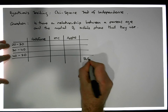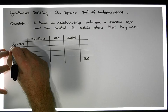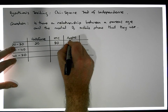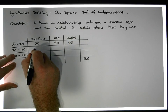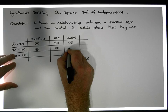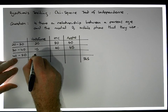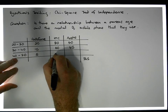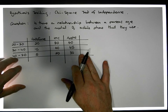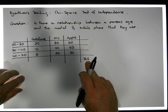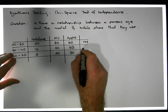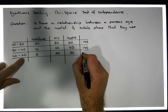There were 365 people in total questioned. In the 20 to 30 year old category: 20 used Vodafone, 80 used HTC, and 40 used Apple. In the 30 to 40 year old category: 15 used Vodafone, 60 used HTC, and 65 used Apple. In the 40 to 50 year old category: 5 used Vodafone, 50 used HTC, and 30 used Apple. The row totals are: 140 for the 20–30 group, 140 for the 30–40 group, and 85 for the 40–50 group.